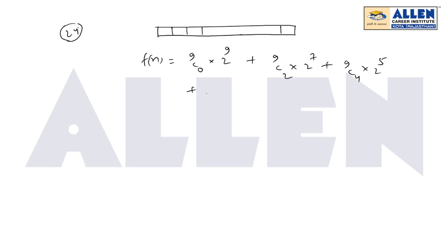We keep on going till 9c8 and 2 to the power 1 - there will be only one square left for blue or green color. To find the sum, it's basically using the binomial theorem. We can see it's only even terms we are getting.